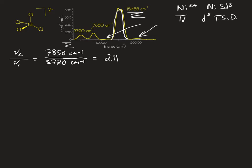Here we have a second set of transitions that we can look at. So we're going to look at that third transition over the lowest energy transition, and this gives us 15,455 wave numbers over 3,720 wave numbers, which equals 4.15.